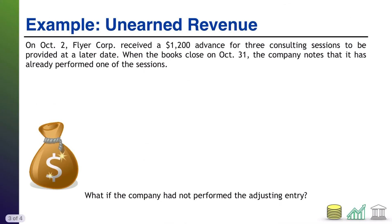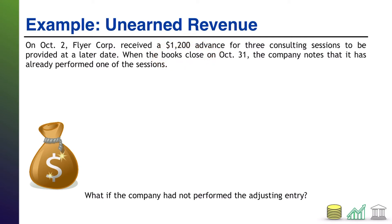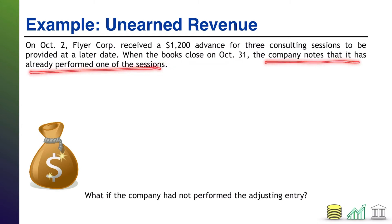Here's an example to walk you through. On October 2nd, FlyerCore receives a $1,200 advance for three consulting sessions to be provided at a later date. When the books close on October 31st — books close simply means the period has ended, and we need to make sure revenue and expense winds up in the proper period — the company notes that it has already performed one of the sessions.